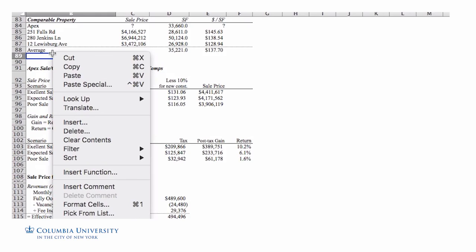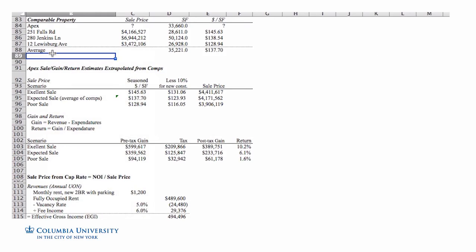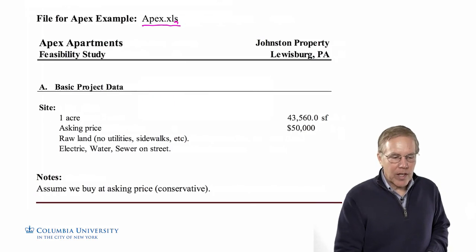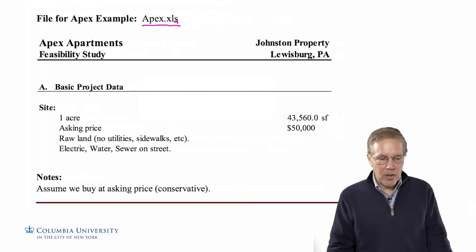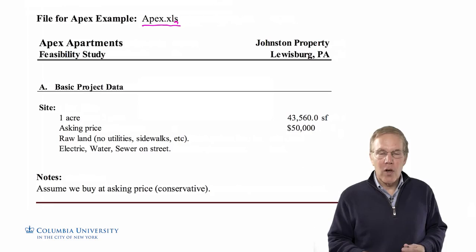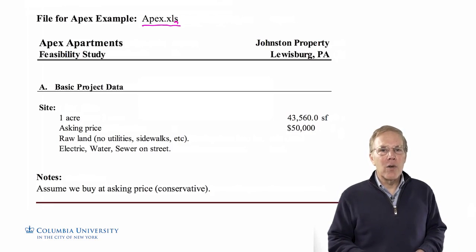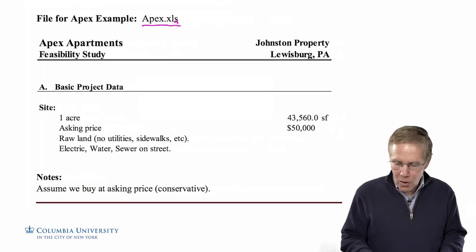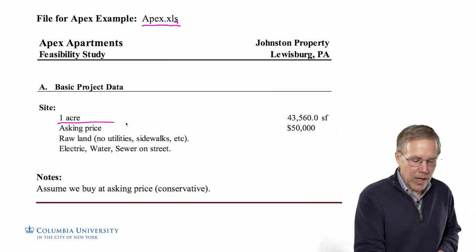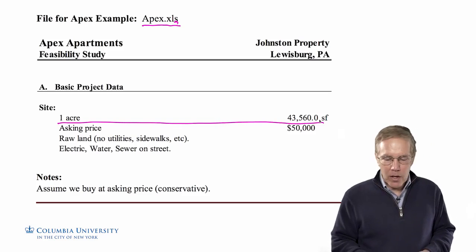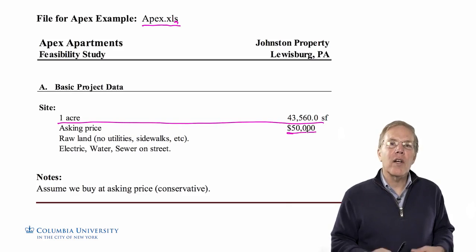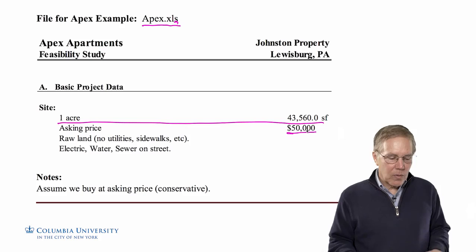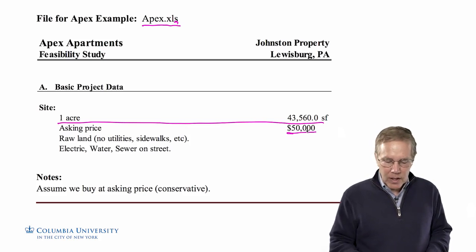So this information is in the Apex spreadsheet on the feasibility page. What does CAG have to know to see if this project is going to be feasible? First, they have to have a site — they've already decided on a potential one-acre site in the area. The asking price is $50,000, and we're going to assume that's what they're going to pay. It's raw land — no utilities, no sidewalks — but it does have electric, water, and sewer on the street.